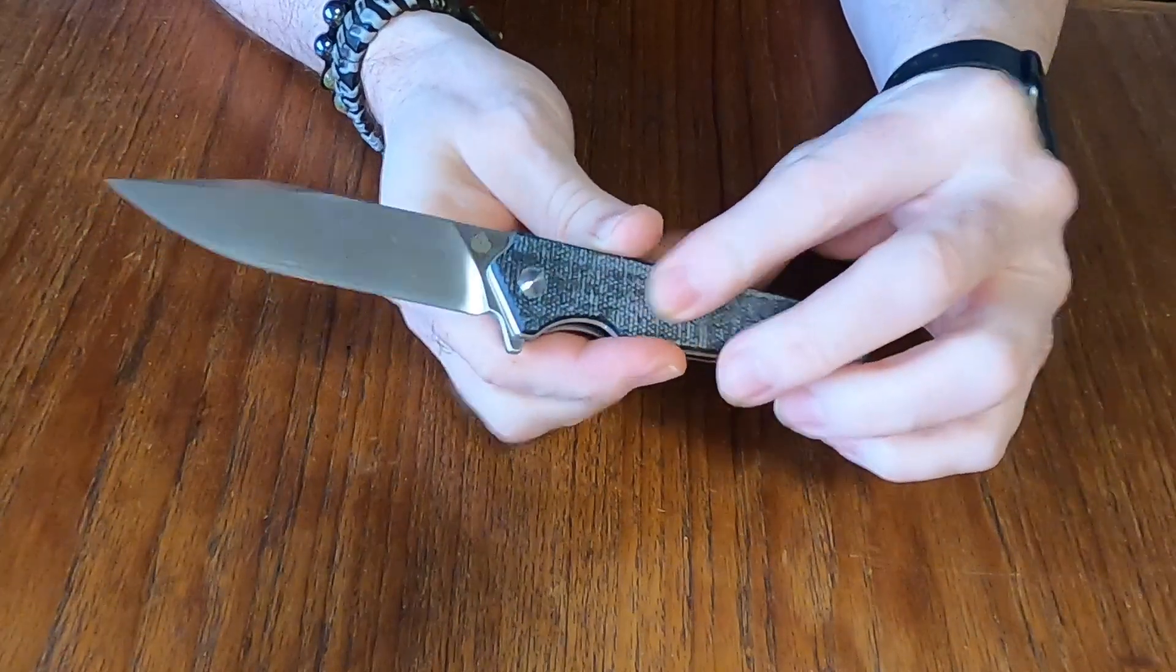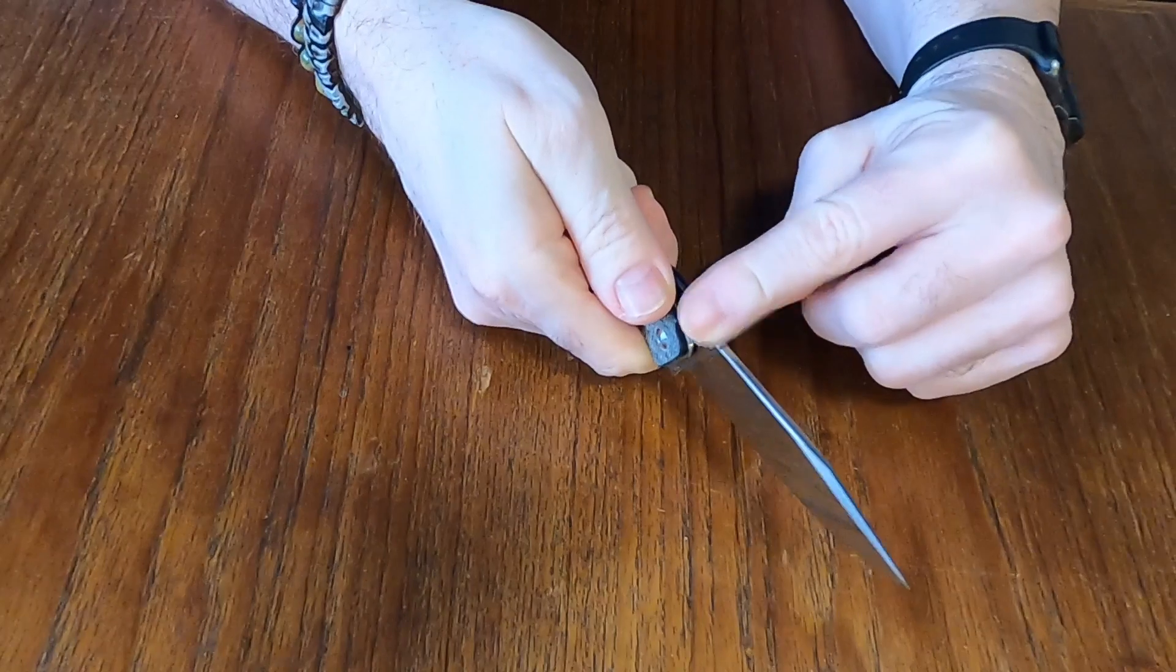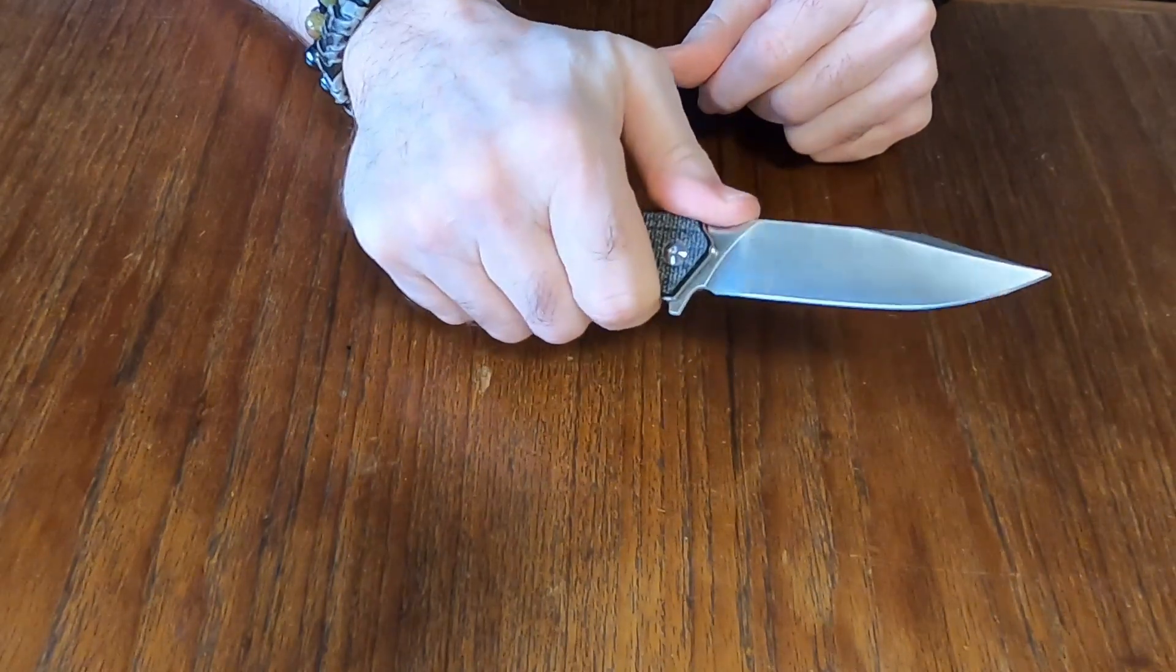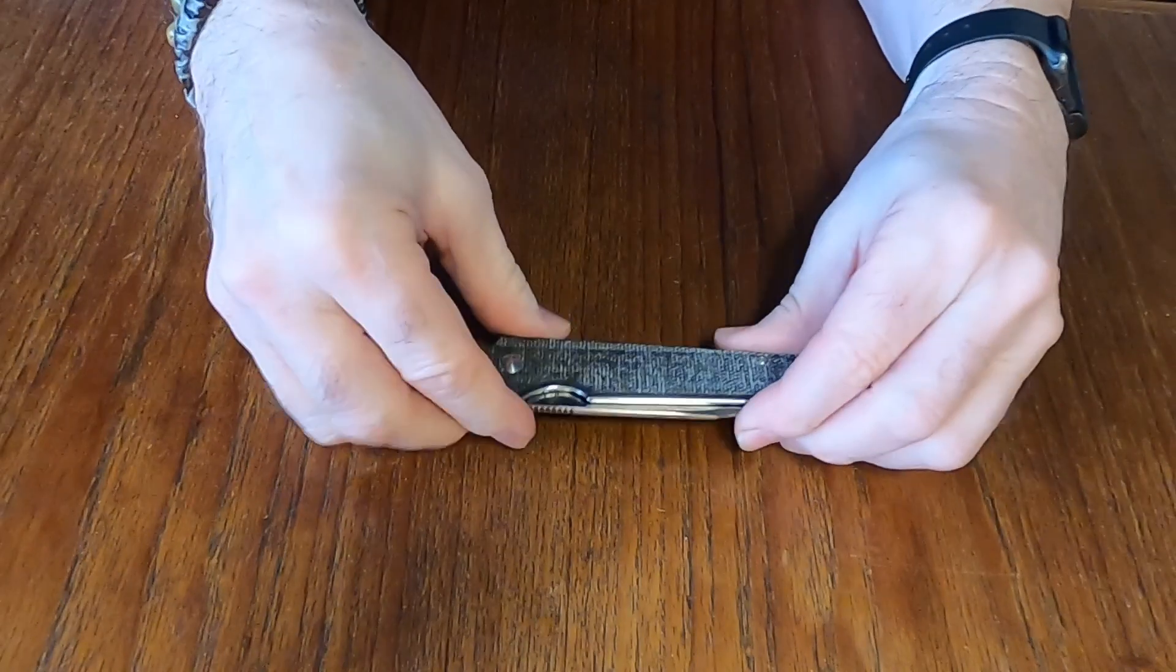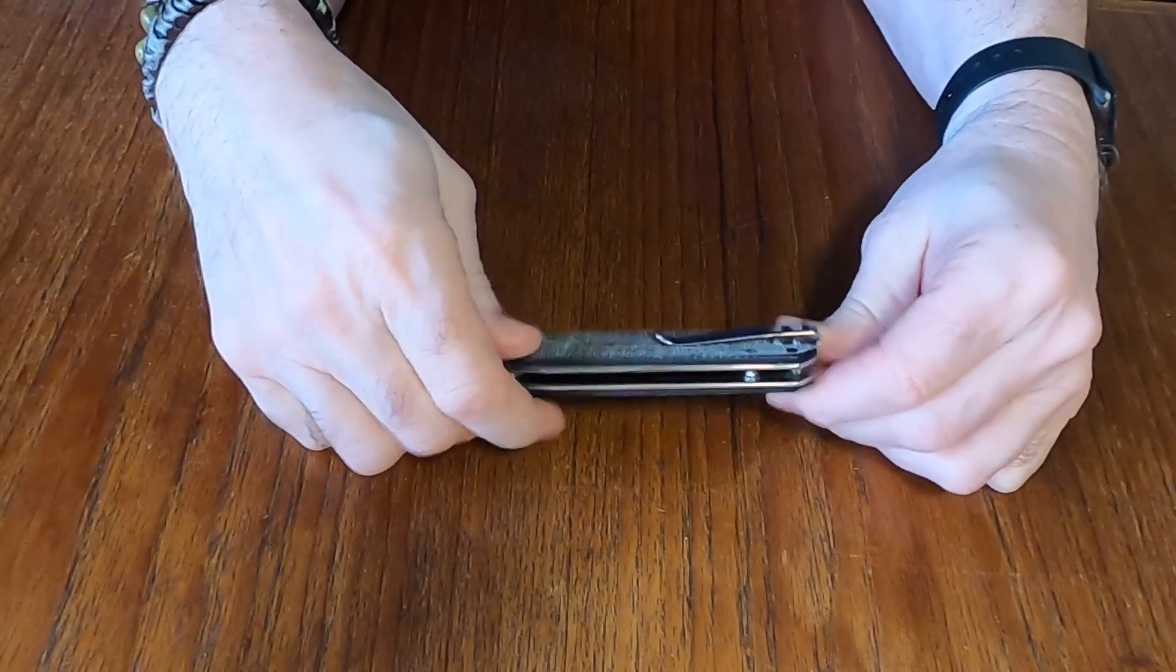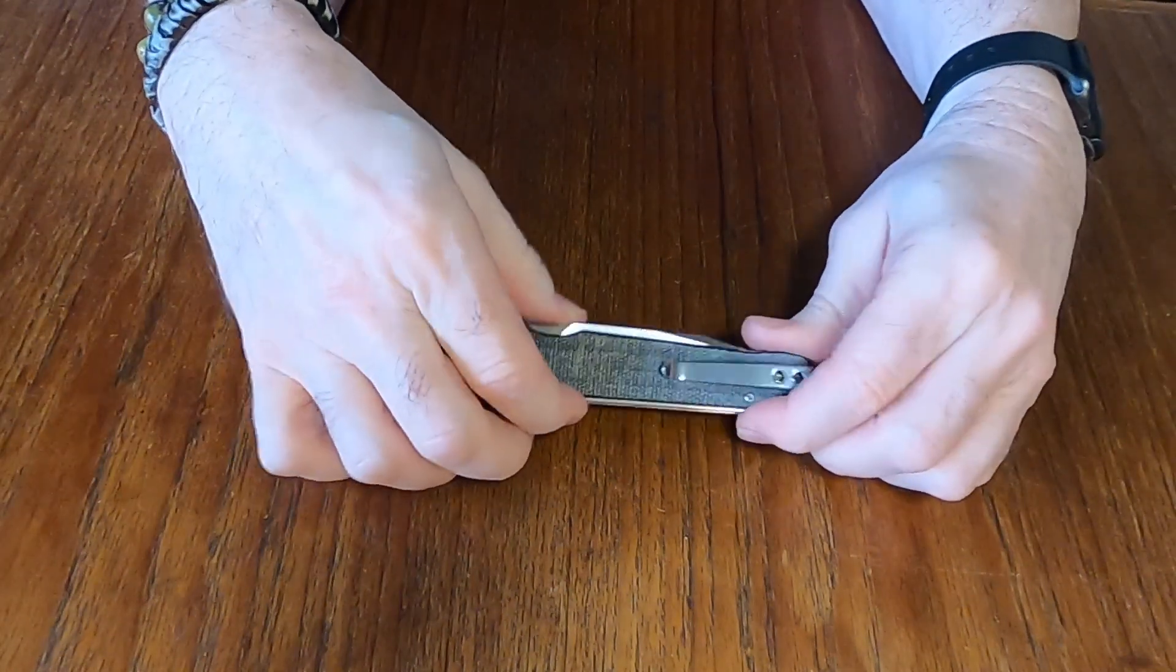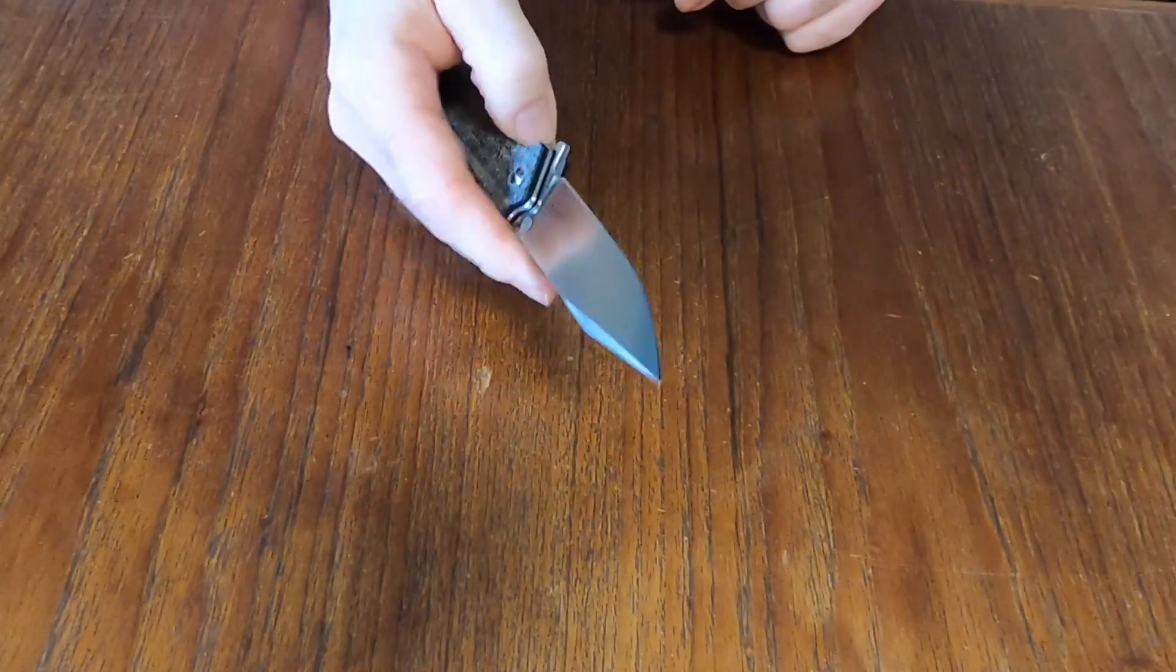And so it shouldn't slip at all in use and also with the jimping you get a good purchase with your thumb, so nice solid grip on that. I already mentioned that it fits the pocket really well because it's nice and slim. It doesn't take up a lot of room and it sits deep in the pocket so all you got showing is the pocket clip.